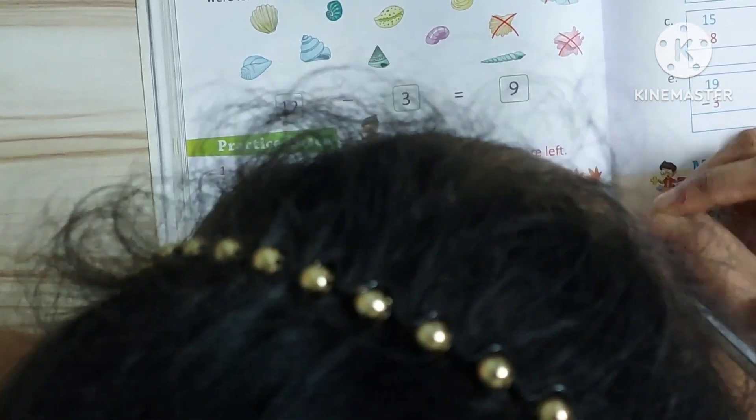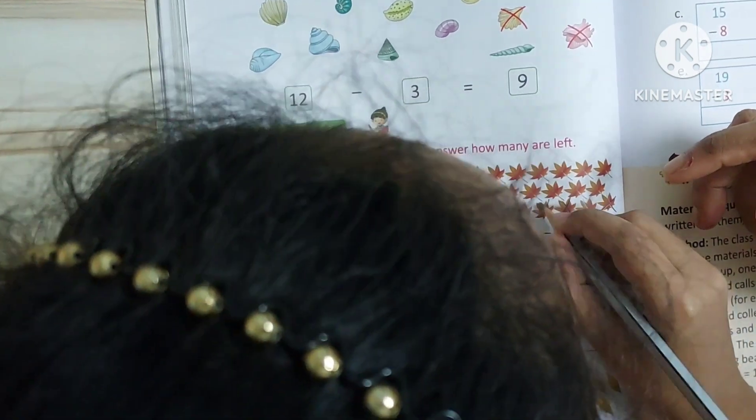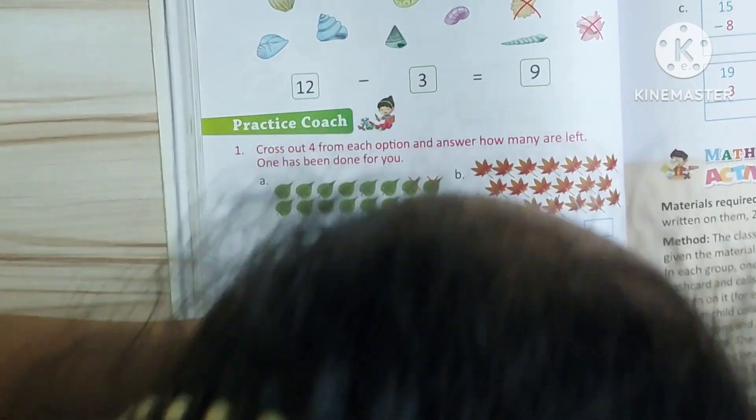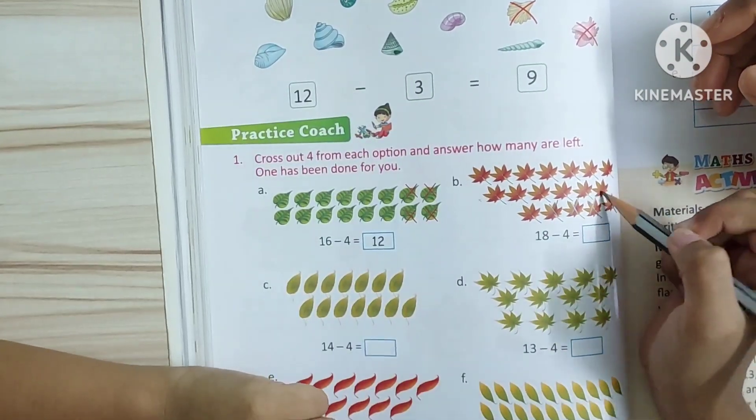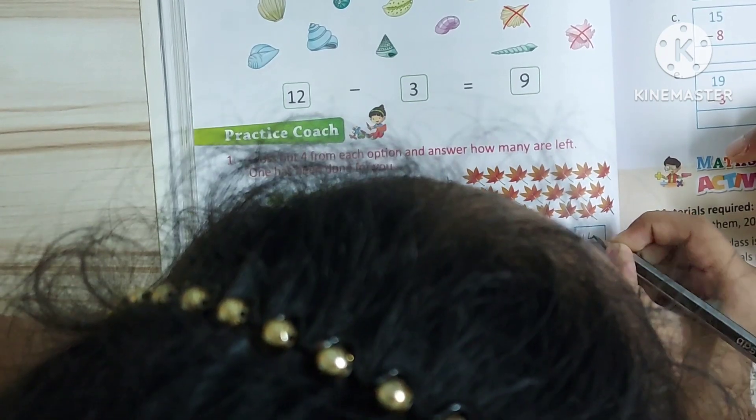1, 2, 3, 4. Now count how many left. Count mode. 1, 2, 3, 4, 5, 6, 7, 8, 9, 10, 11, 12, 13, 14. Answer is 14. Okay.